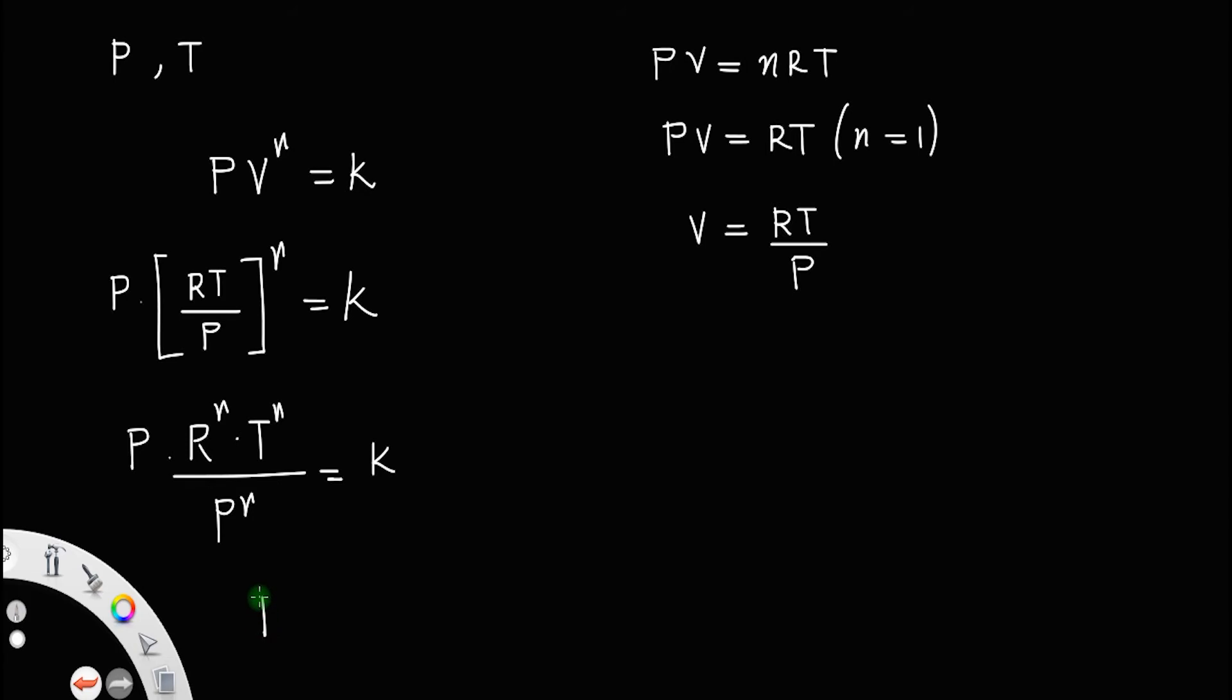So this will be P raised to 1 minus gamma because a raised to m by a raised to n is equal to a raised to m minus n. Here it is 1. So 1 minus gamma into T raised to gamma is equal to K divided by R raised to gamma.